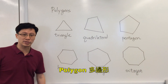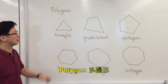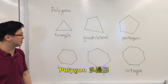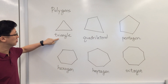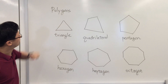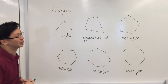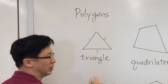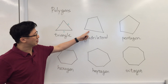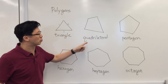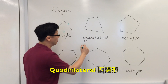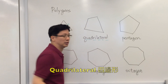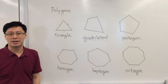Now we come to polygons — figures with three or more sides. This one is a triangle, a plane figure with three sides. This one we call a quadrilateral, which means a plane figure with four sides.